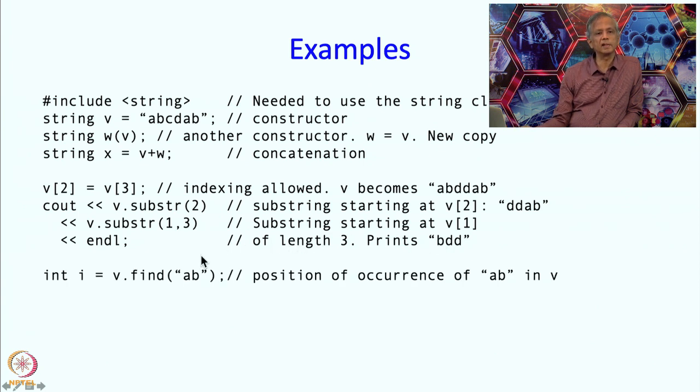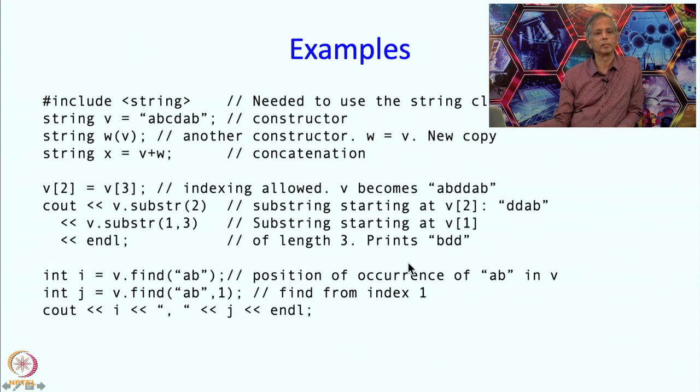Then we can find, we can look for strings inside a given string. For example I can write v dot find, so this is our v and we are finding ab inside it. Where does ab appear? It appears at 0, so this will return 0. But suppose I execute v from position 1. This says find ab but execute it from position 1. So this is our current v. I am not going to start over here, I am going to start over here. In this case my occurrence is going to be at 0, 1, 2, 3, 4. So this should be at occurrence 4. This will end up printing 0 and 4 because i will be set to 0 and j will be set to 4.